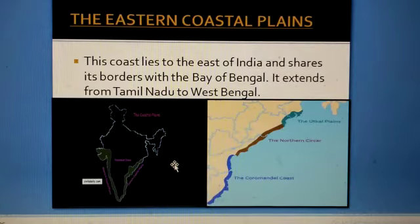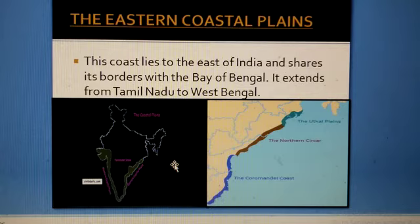Now comes the eastern coastal plains of India. This coast lies to the east of India and shares its borders with the Bay of Bengal. It extends from Tamil Nadu to West Bengal.